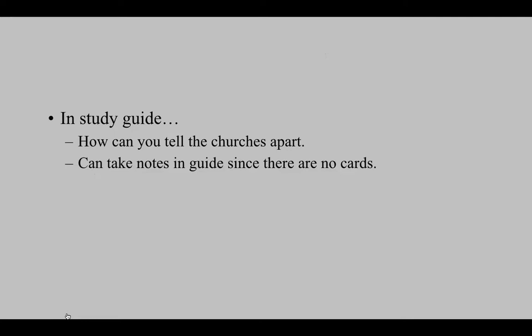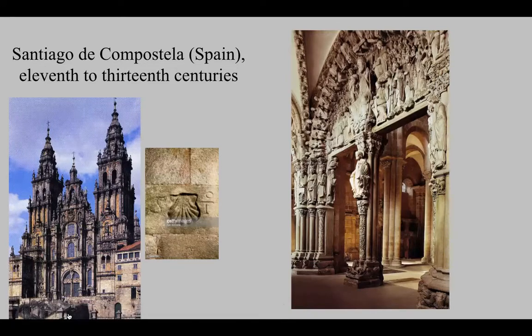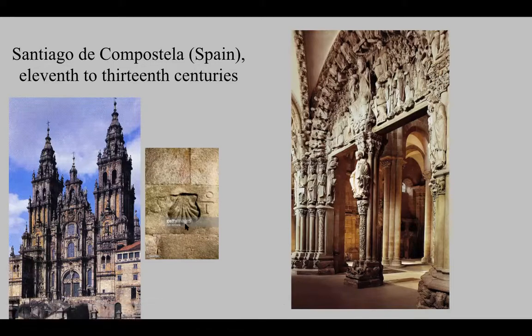We'll be looking at just one Romanesque church in depth, but I want to show you some others as well. This is Santiago de Compostela in Spain — the church that people were trying to get to. The style on the outside is actually not Romanesque; it's Baroque, which shows you that many of these churches were built and modified over hundreds of years, and the exterior style doesn't match the interior very well. This insignia of a shell is basically a symbol of a pilgrim, representative of Santiago de Compostela because it's on the coast — pilgrims would wear a patch or carry a souvenir with this shell to show they were on pilgrimage.